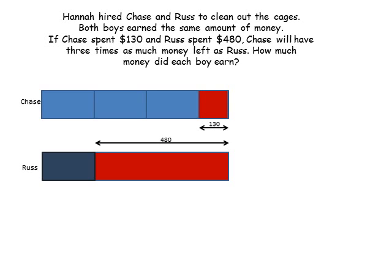Again, this is sort of trial and error when you draw your boxes. I understand it will take a little practice, but hopefully you'll get it. Make sure that Russ's remaining money is one third of what's left with Chase.